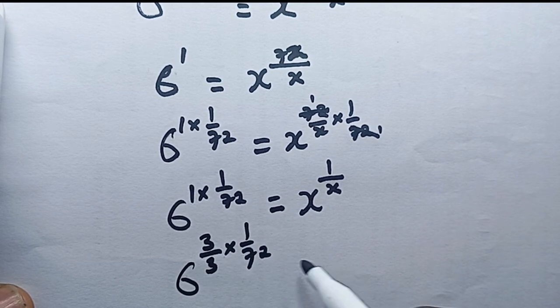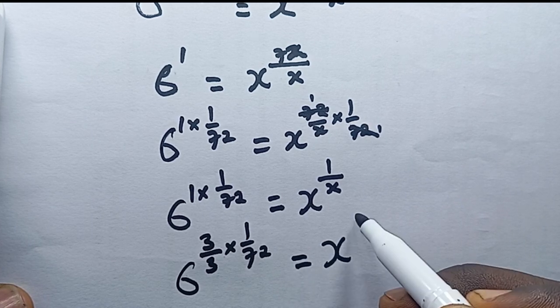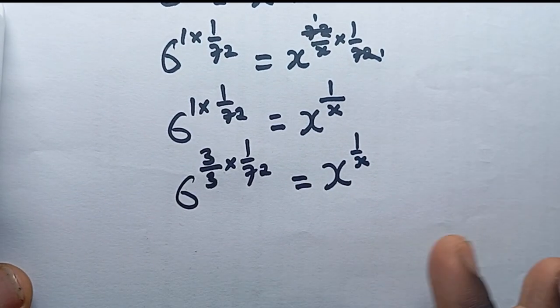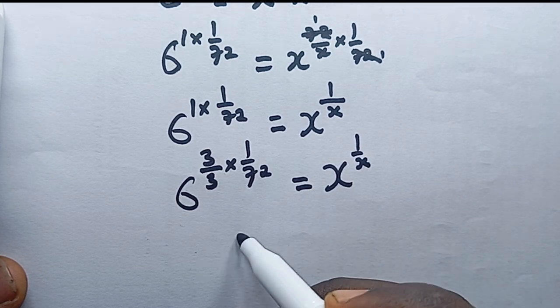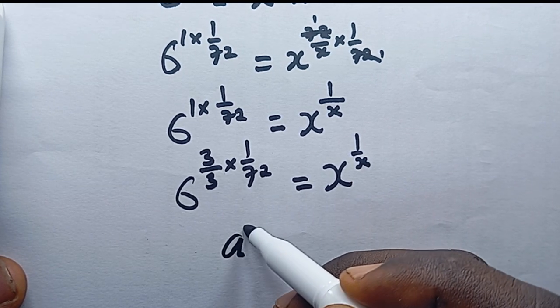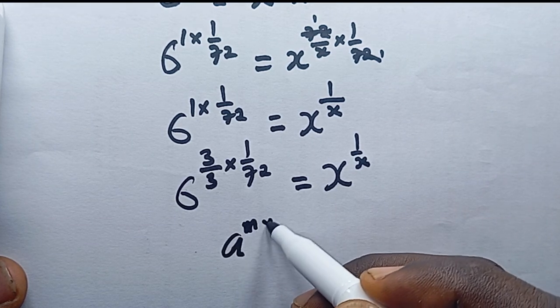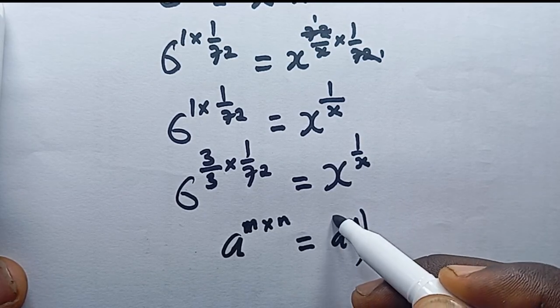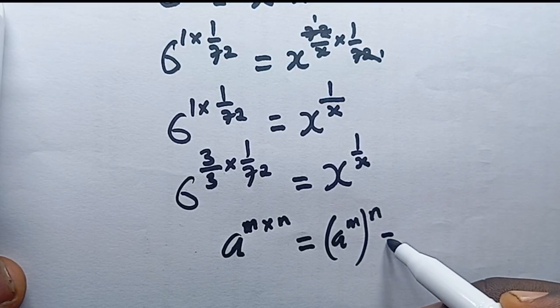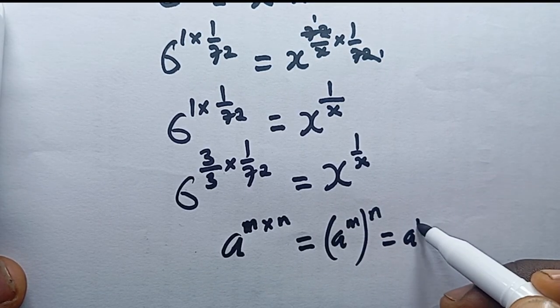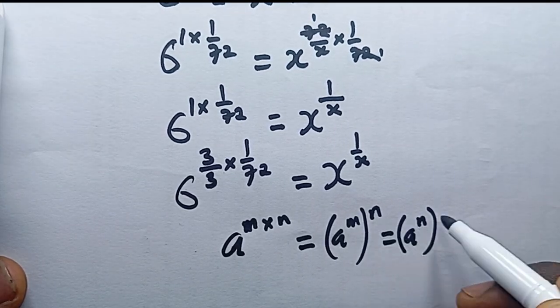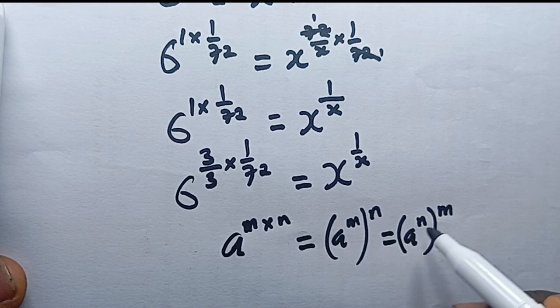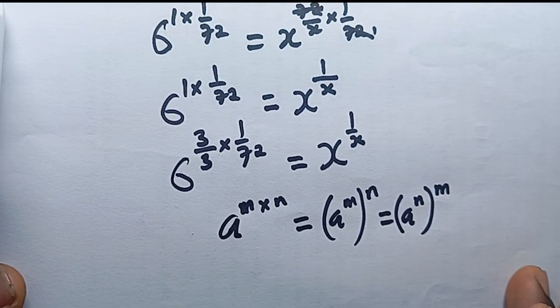According to the exponential law of indices, when you have e power m multiplied by n, you can write it as e power m bracket n, and you can also write it as e power n with m outside. This multiplication is commutative, you can switch the letters.